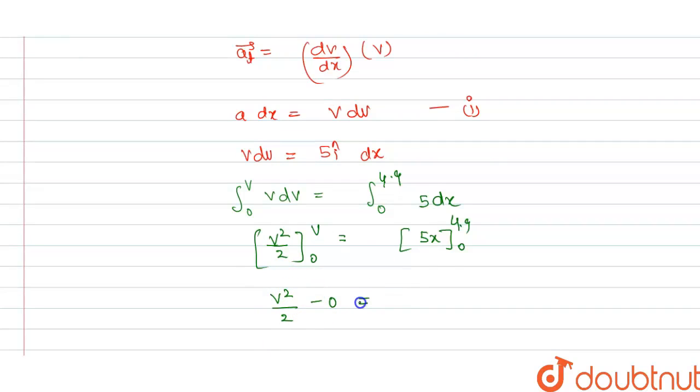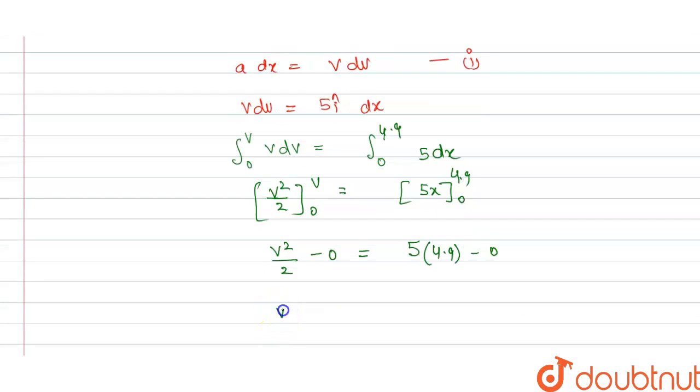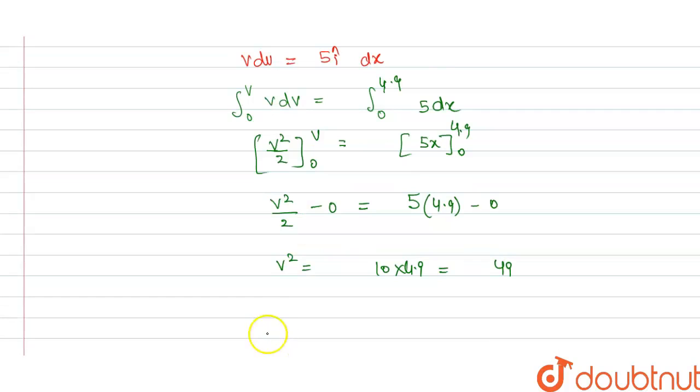From this we get v²/2 - 0 = 5 × 4.9 - 0. So from this we get v² = 10 × 4.9 = 49.